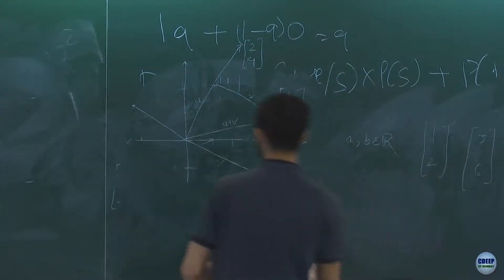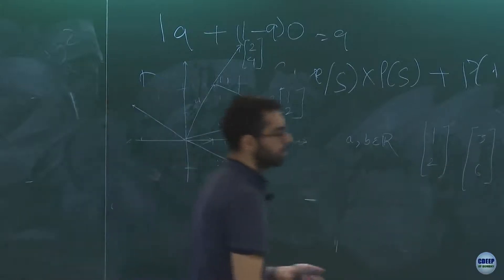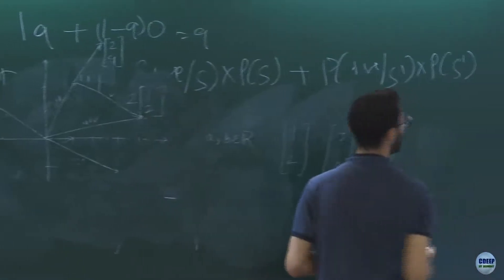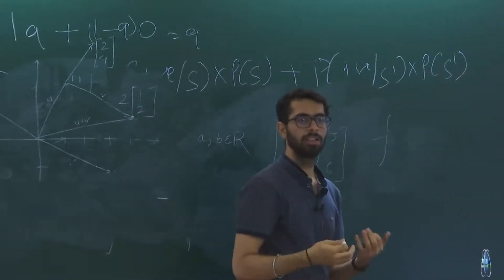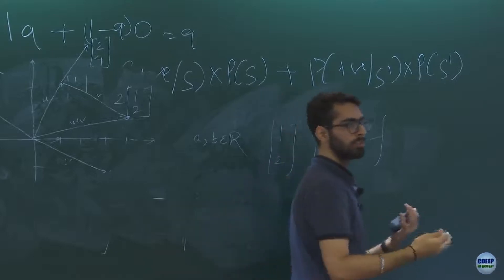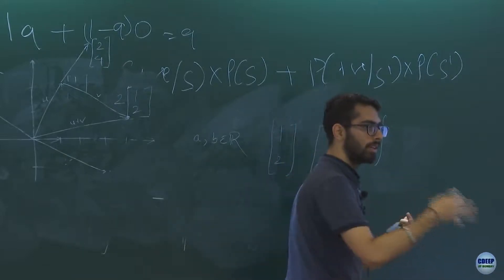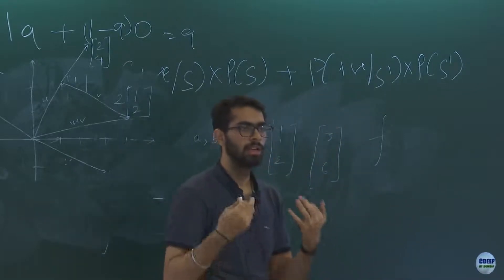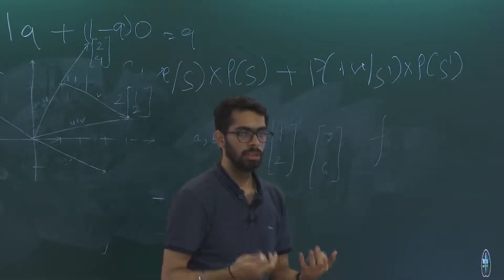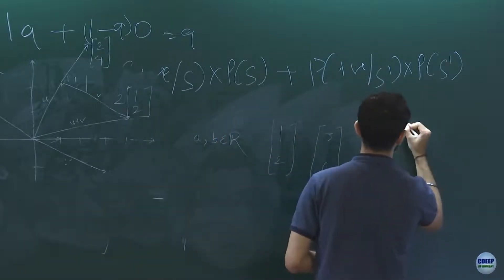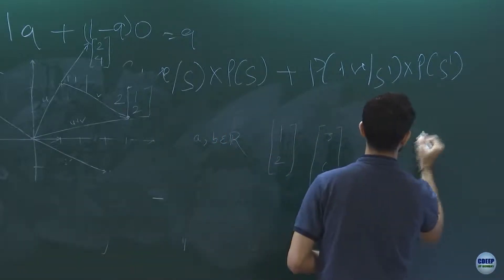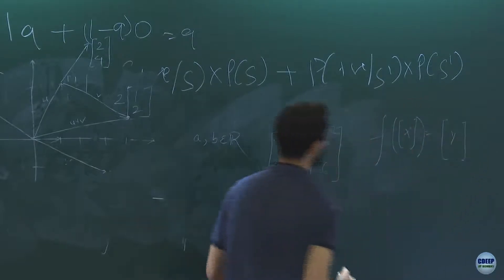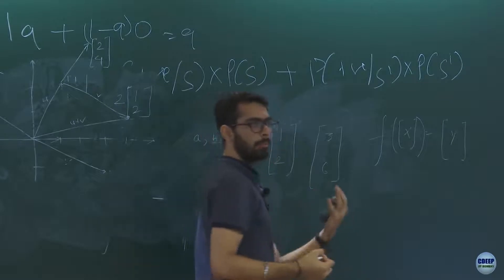What do we mean by transformation? A transformation is simply a function: you give something as input and get something as output. Here, we give a vector as input and get a vector as output. We are talking about a special kind of transformation called linear transformations. Given a vector x, we get some vector y out of it, and this special transformation is multiplying by a matrix.